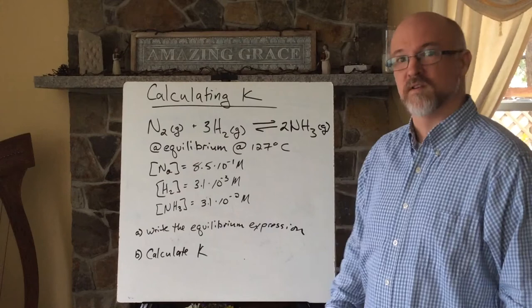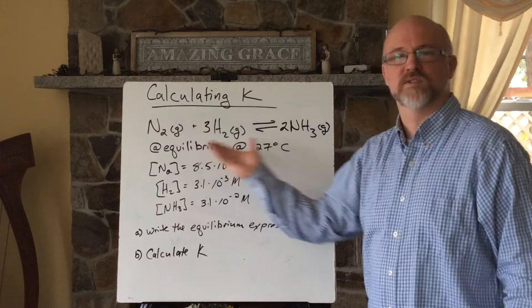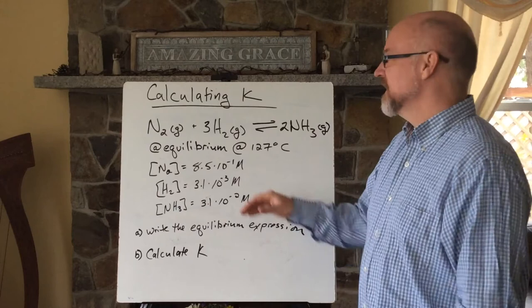So let's try and work through one of the problems, practicing calculating K. So here we have a reaction. This reaction is part of what's called the Haber process. It's how ammonia gets produced.